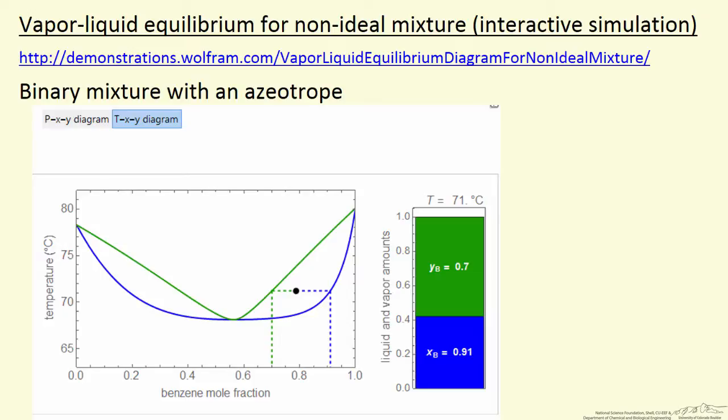And the composition of the phases, the dot here, is in the two-phase region, so it consists of so much vapor with this composition and so much liquid with this composition.